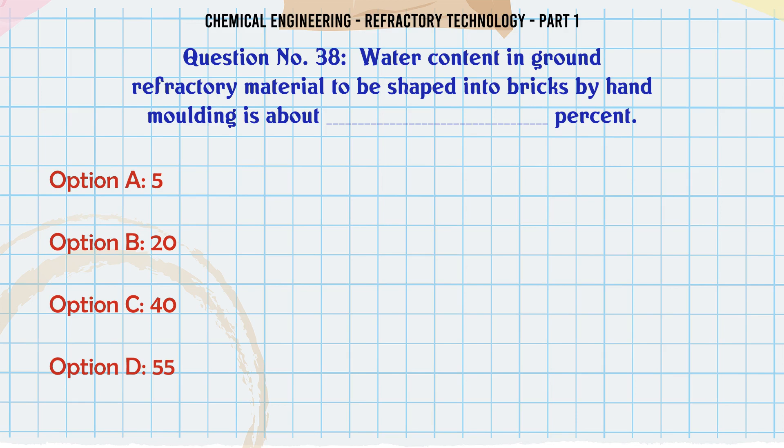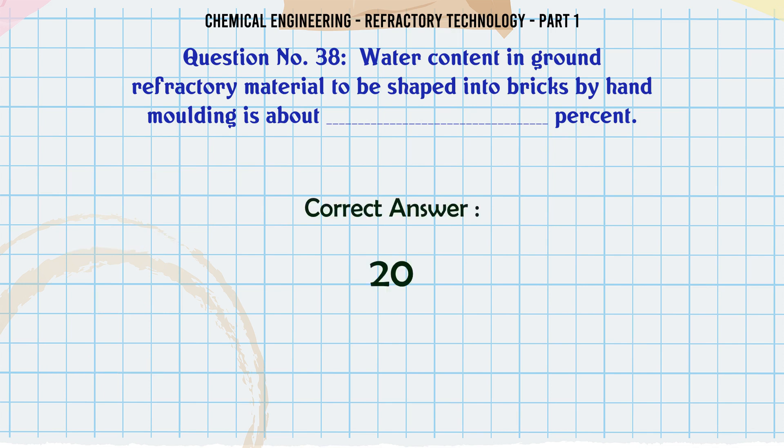Water content in ground refractory material to be shaped into bricks by hand moulding is about ___ percent. A. 5, B. 20, C. 40, D. 55. The correct answer is 20.